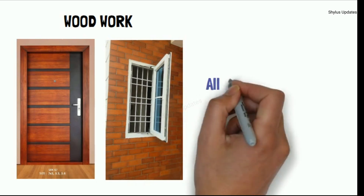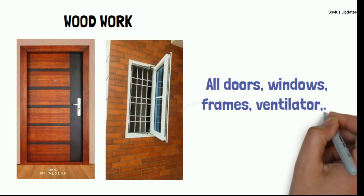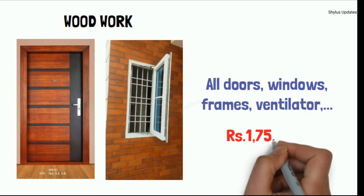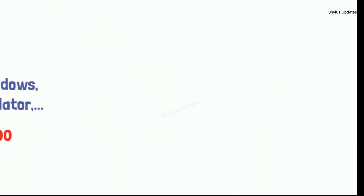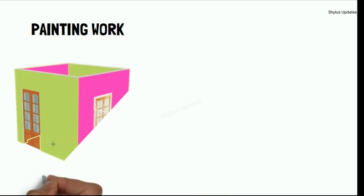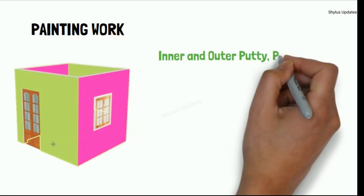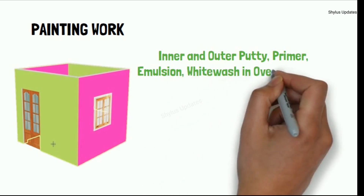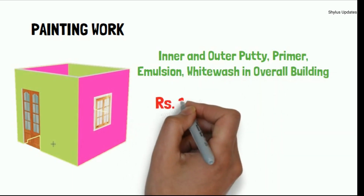For woodwork, including all doors, windows, frames, and ventilators, the total amount is Rs. 1,75,000. For painting work, including inner and outer putty, primer, emulsion, and whitewash for the overall building, the amount is Rs. 1,40,000.